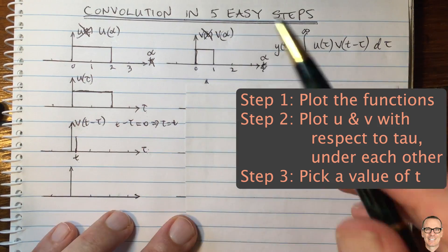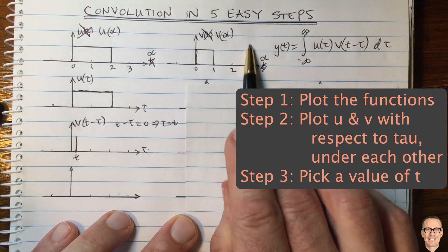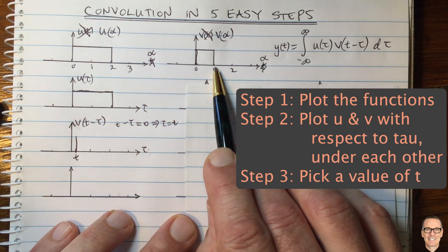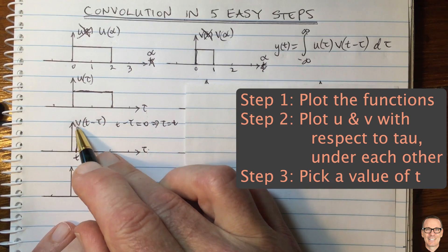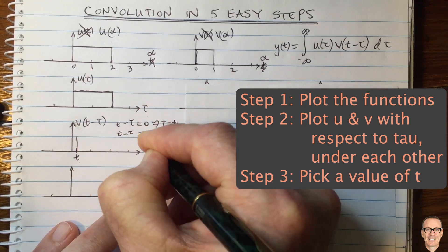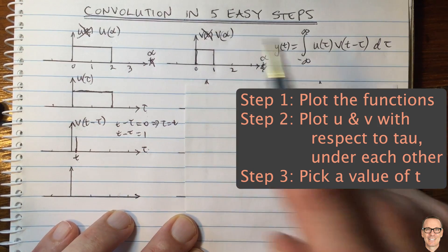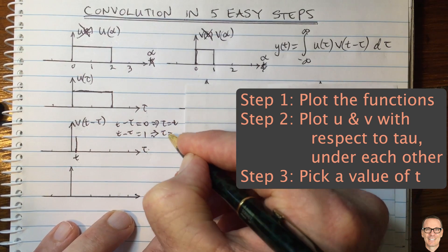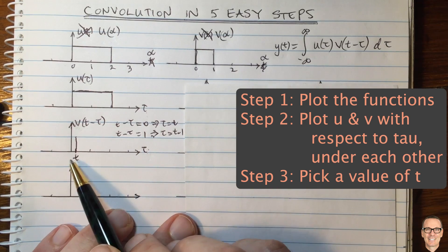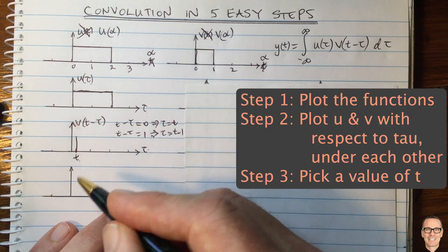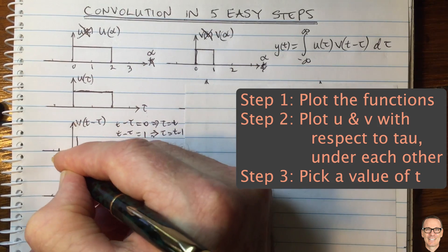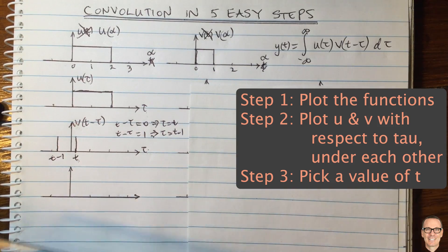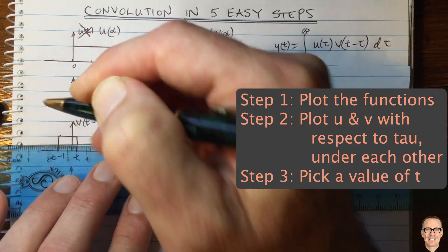Let's pick another interesting point in our function — that's when the thing in the brackets equals one. The thing in the brackets of the function we want to plot is t minus tau; when that equals one, we get that transition. We rearrange and get tau equals t minus one. So t minus one is here on our plot — that's when that transition happens. In between those two transitions it's a constant, so we can draw the complete function that's in the integral we need to calculate.